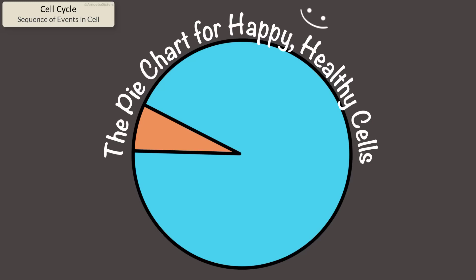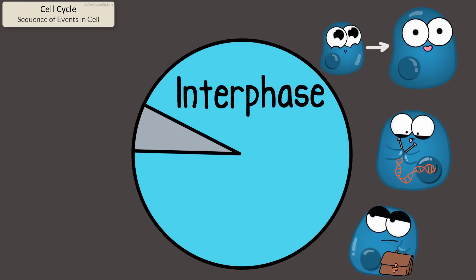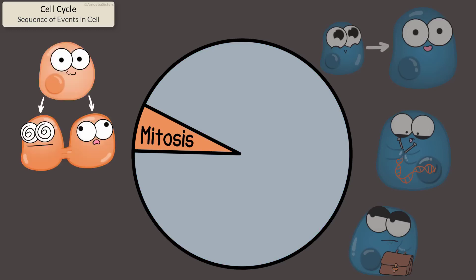The cell cycle is often represented as a pie chart like this. Cells are either in one of two different phases. A phase called interphase where the cells themselves are growing, replicating their DNA, doing their cell functions, or they are in M phase which includes mitosis and the actual splitting of the cytoplasm, cytokinesis. So this M phase is where cells actually divide to make more cells.